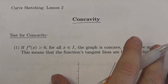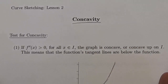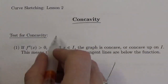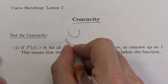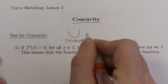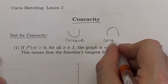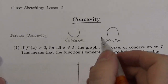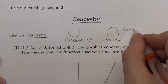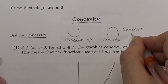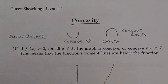Concavity deals with the type of curvature that a graph will have along a certain interval of its domain. You're going to have two types of curvature: it's either going to be concave, which curves up like this, or convex. Another way of describing this is concave up and concave down, as long as you understand the difference between them.